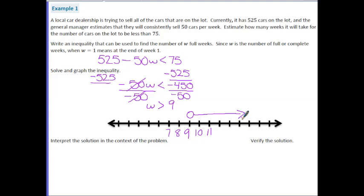Let's interpret the solution in the context of the problem. This is basically saying it will take the dealership more than 9 weeks to get less than 75 cars on the lot.